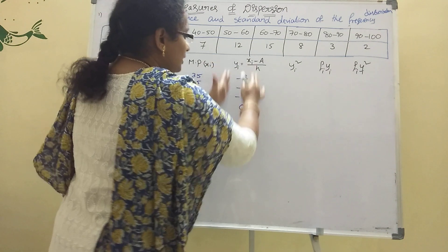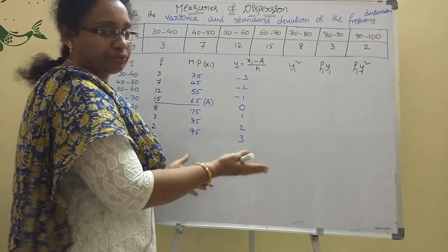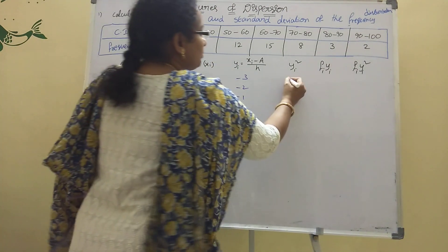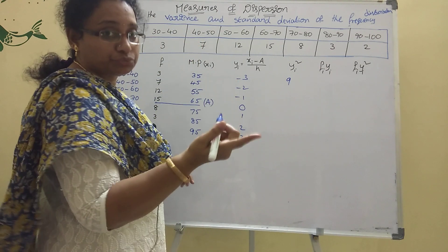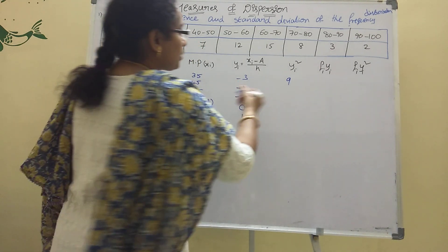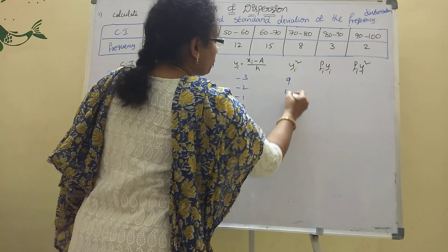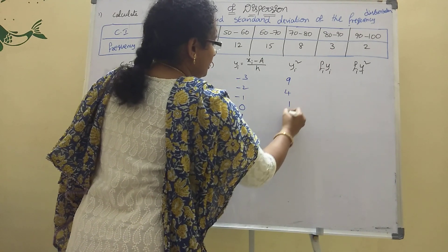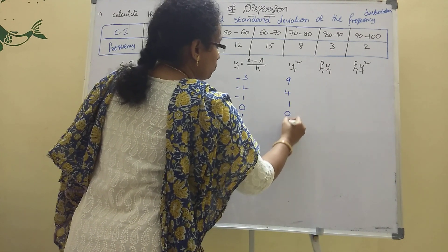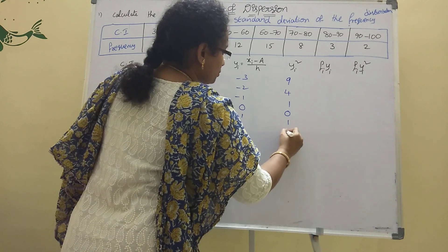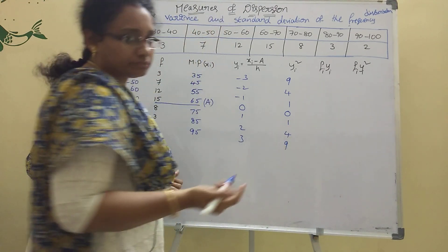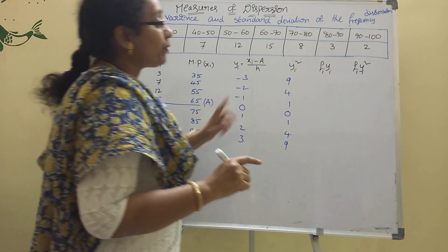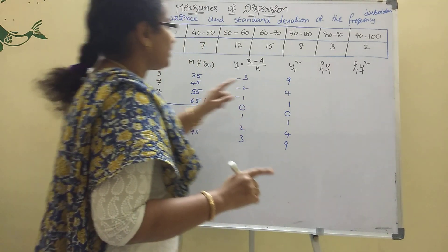Next, yi² is simply yi squared. So −3 squared is 9, −2 squared is 4, −1 squared is 1, 0 squared is 0, 1 squared is 1, 2 squared is 4, 3 squared is 9.